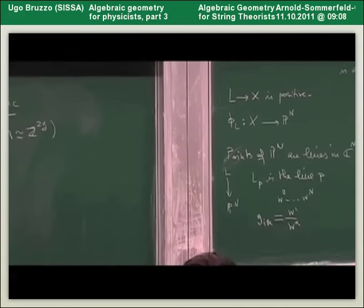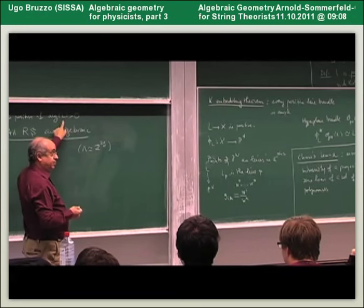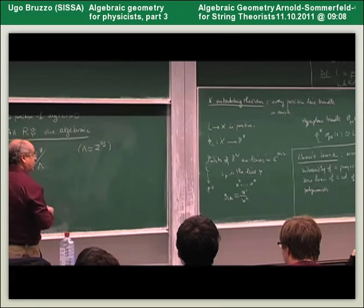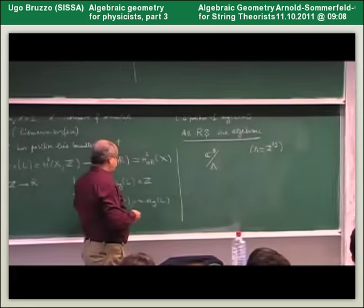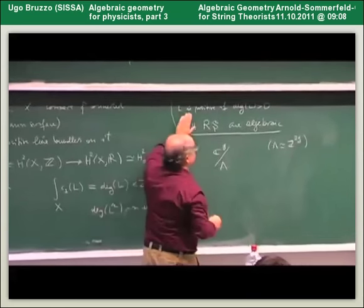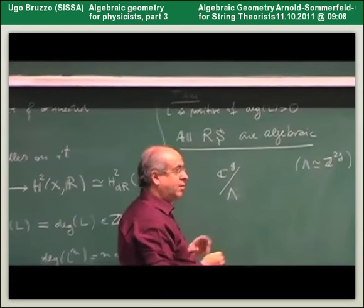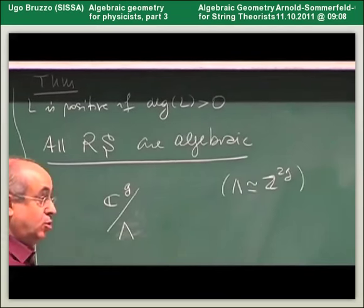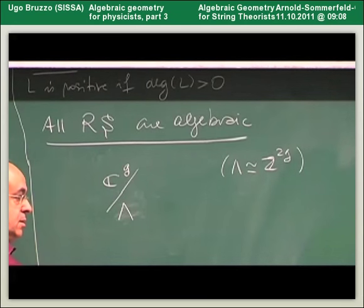Question: What happens if the degree is zero — can the values make it positive? Answer: No, you cannot. When the degree is zero, the line bundle is not positive. What I mean is that on every Riemann surface, there exists a line bundle of positive degree. This is a definition of degree: to every line bundle we associate a number which is its degree. Then a theorem states: a line bundle of positive degree is positive. So on a Riemann surface there are line bundles of positive, zero, and negative degree. Those of positive degree are positive, and a suitable power will provide a projective embedding.